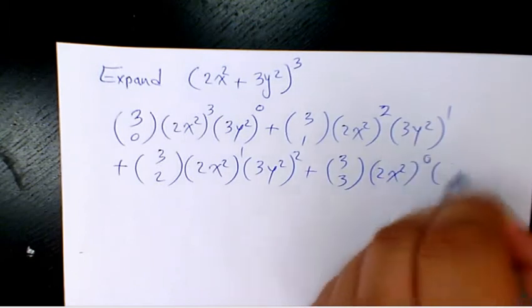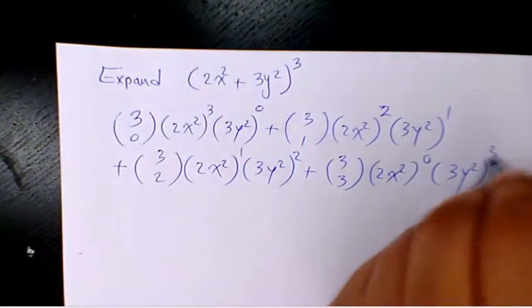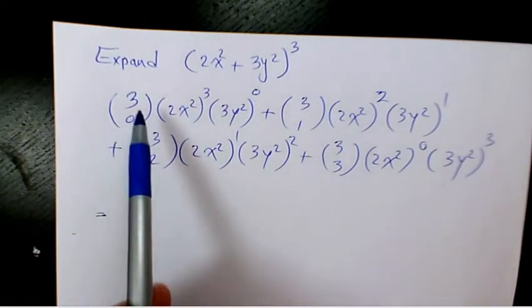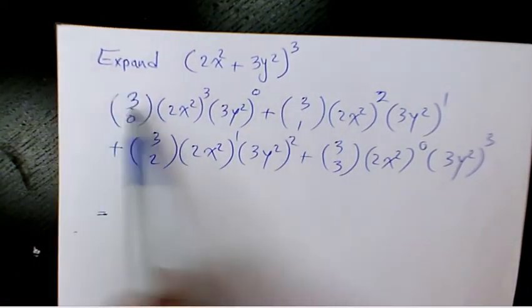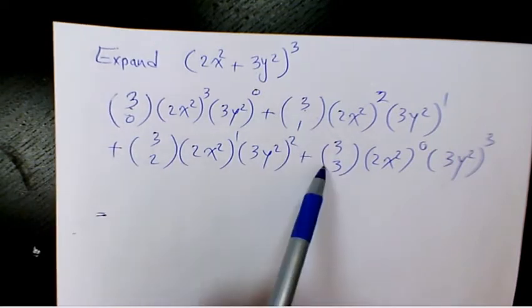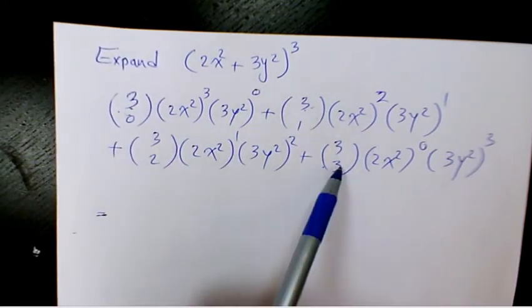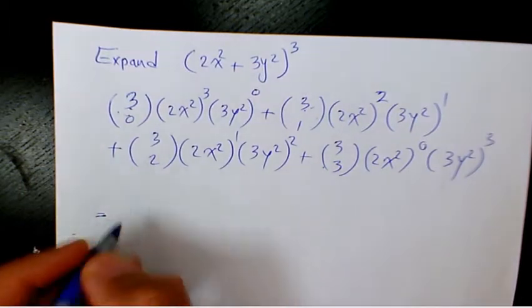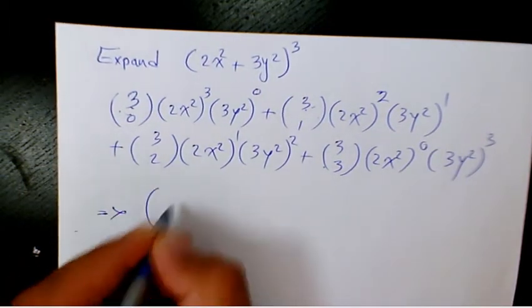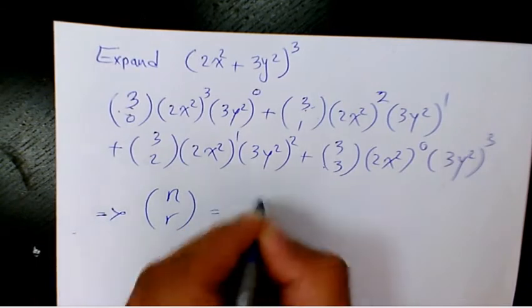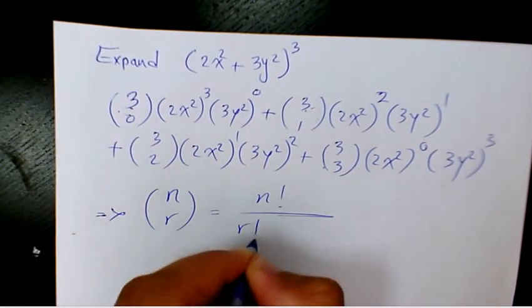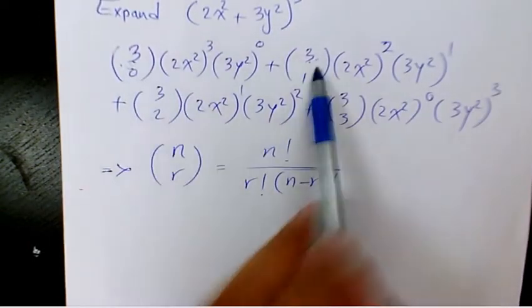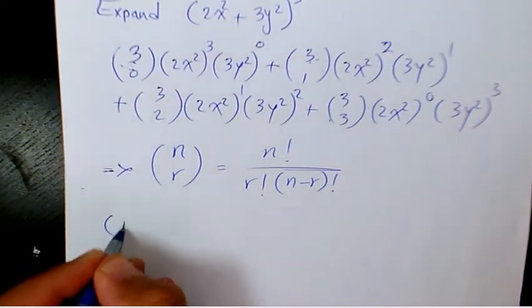If we use Pascal's triangle, these four coefficients are going to be 1, 3, 3, 1. Or you can use the formula: n choose r equals n factorial over r factorial times (n minus r) factorial. Either Pascal's triangle or that formula gives us 1, 3, 3, 1.